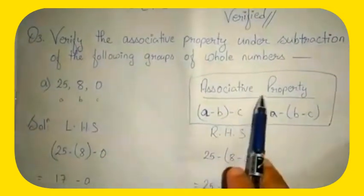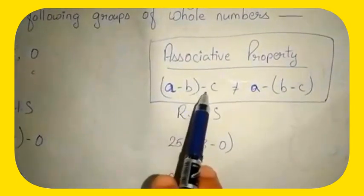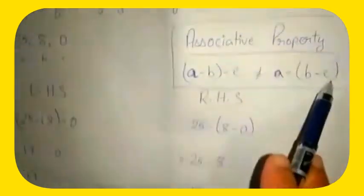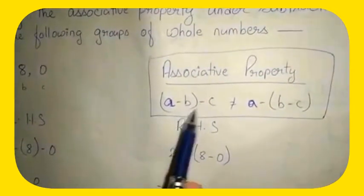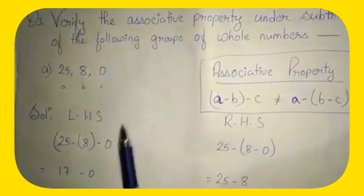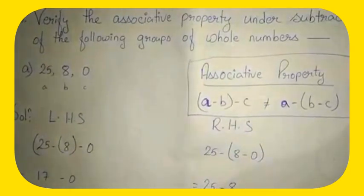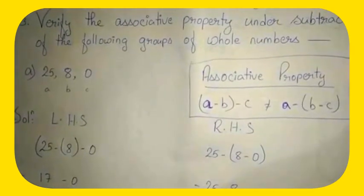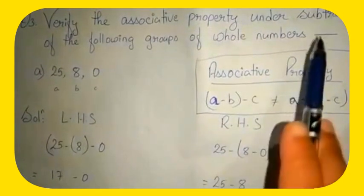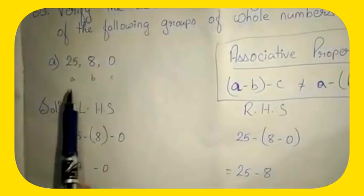As you know, in the associative property: (a minus b) minus c is not equal to a minus (b minus c). That means LHS is not equal to RHS. So in this question you have to prove whether LHS is equal to or not equal to RHS. We have to prove that LHS is not equal to RHS — only then it will verify the associative property under subtraction method.